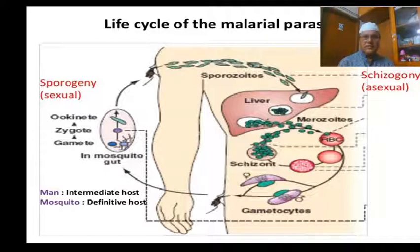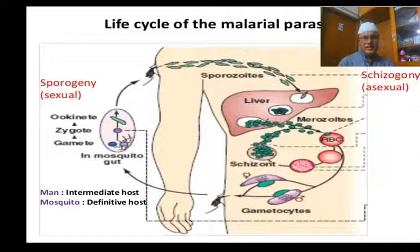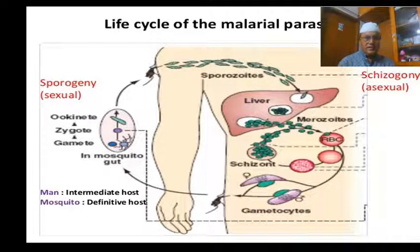Malaria is a parasitic disease caused by Plasmodium. You should know the life cycle of the malaria parasite and how it invades humans. The vector is the Anopheles mosquito, which is the definitive host, and man is the intermediate host.